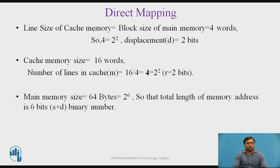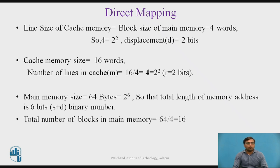The main memory size is assumed to be 64 bytes. Since 64 equals 2 raised to 6, there will be 64 words in main memory, and we need 6 bits to uniquely identify them. The two least significant bits identify the particular word, and the remaining four MSB bits identify that particular block in main memory. The total number of blocks in main memory is 64 divided by 4, which equals 16 blocks.